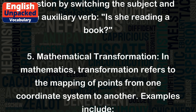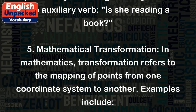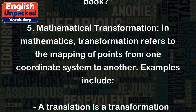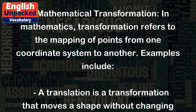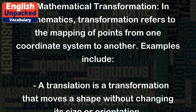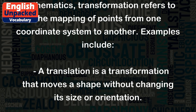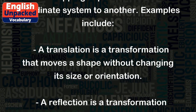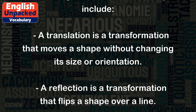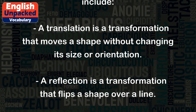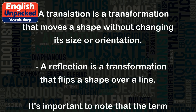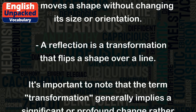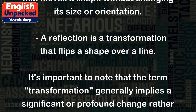Mathematical transformation. In mathematics, transformation refers to the mapping of points from one coordinate system to another. Examples include: a translation is a transformation that moves a shape without changing its size or orientation. A reflection is a transformation that flips a shape over a line.